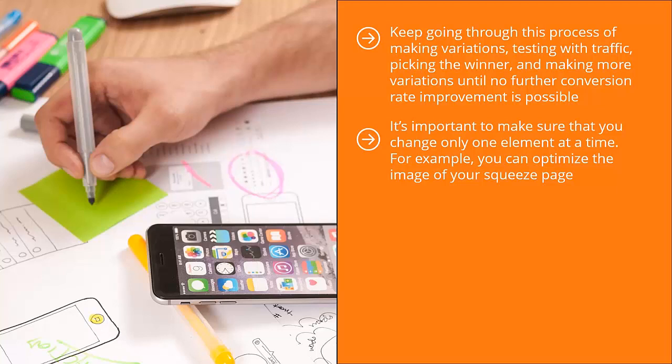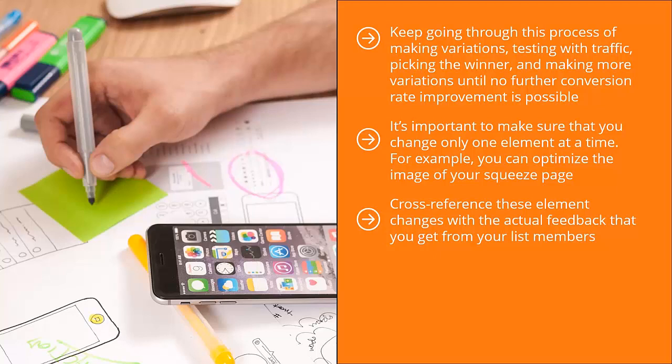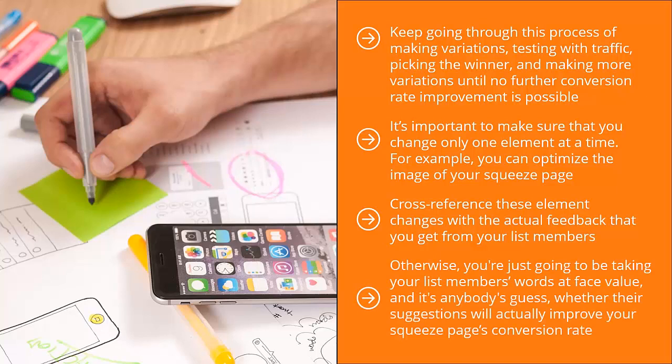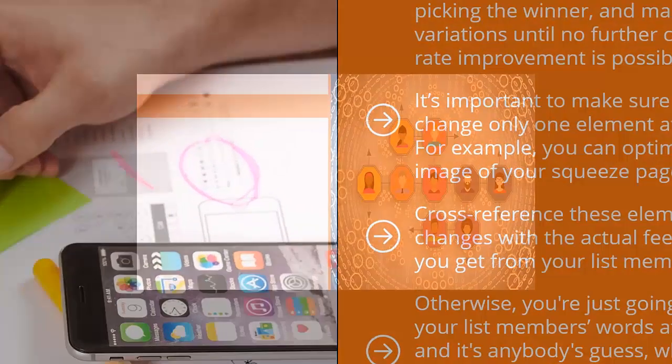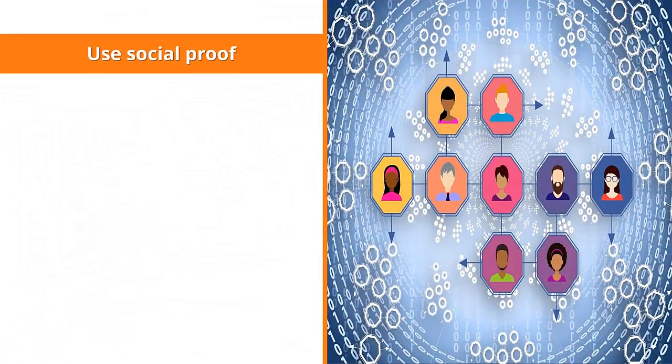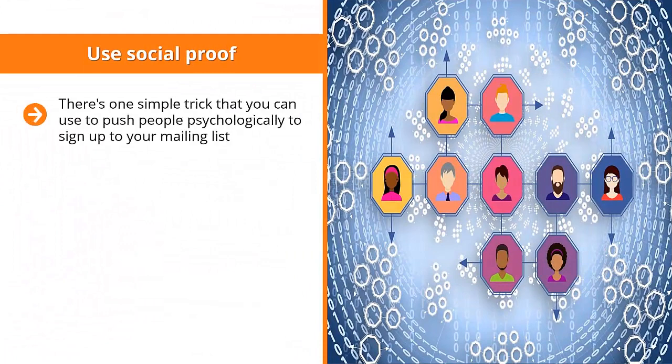For example, you can optimize the image of your squeeze page first. Once your squeeze page converts at a higher rate and can't improve any further, then start changing the text and see if that has a positive effect. Move from one element at a time until the squeeze page converts at a fairly high and predictable rate. Cross-reference element changes with the actual feedback you get from your list members. Using these two pieces of data, you should be able to come up with a statistics-driven modification strategy.